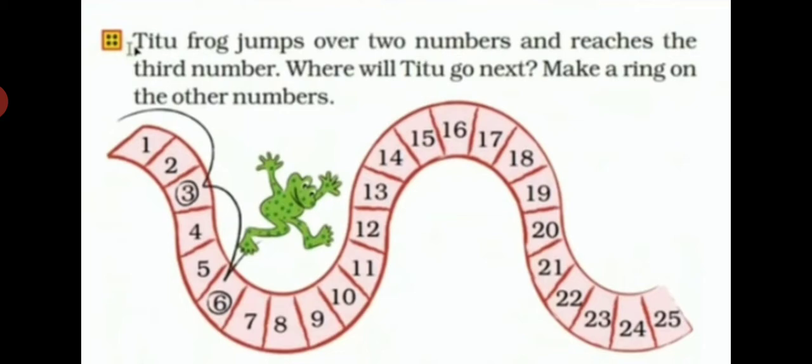Next: T2 frog jumps over two numbers and reaches the third number. Where will T2 go next? Make a ring on the other numbers. Every two numbers the frog jumps and reaches the third number. That means the table of three is going on. You have to make a ring on the numbers where the frog jumps.